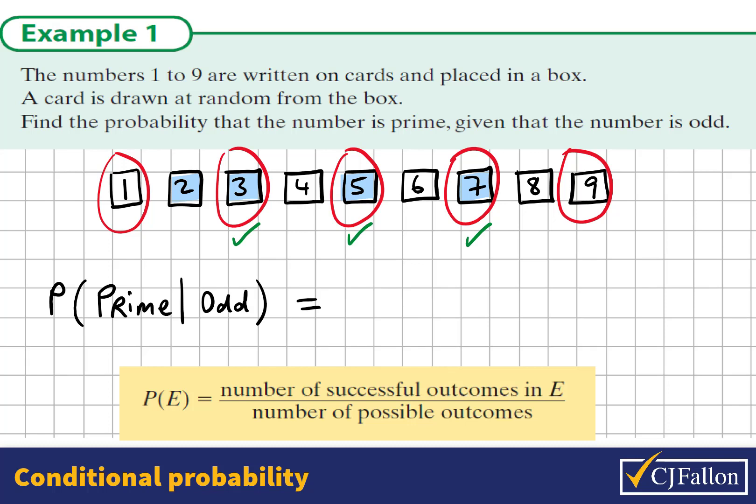So what's the odds out of these 5 numbers that the one is prime? And we see that there are 3 of these numbers are prime numbers: 3, 5, and 7. And 2 of them are not. So the odds are that 3 out of 5 is the probability we would draw a prime number given that it's odd.